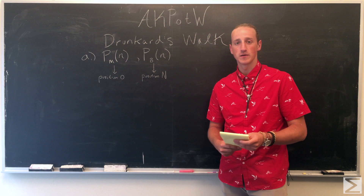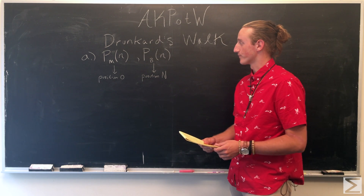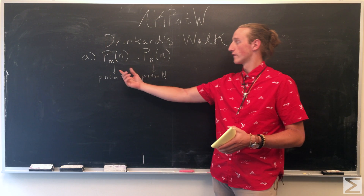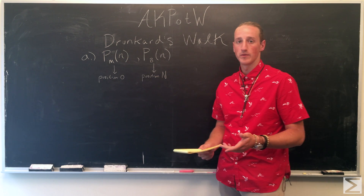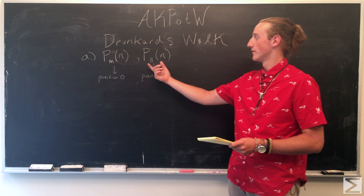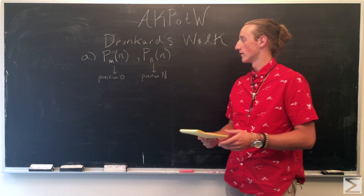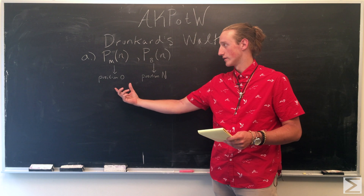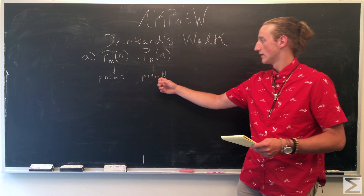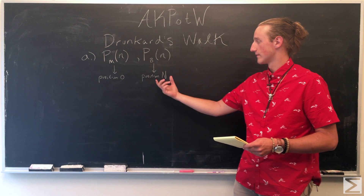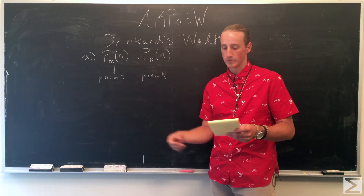We're going to look at the probability he ends up either at McDonald's or the bar. We consider McDonald's as position 0 and the bar at position N, so the probability of ending at the bar is at position N and McDonald's is at position 0.